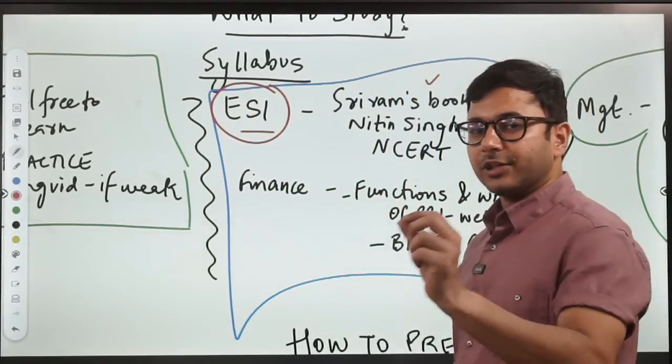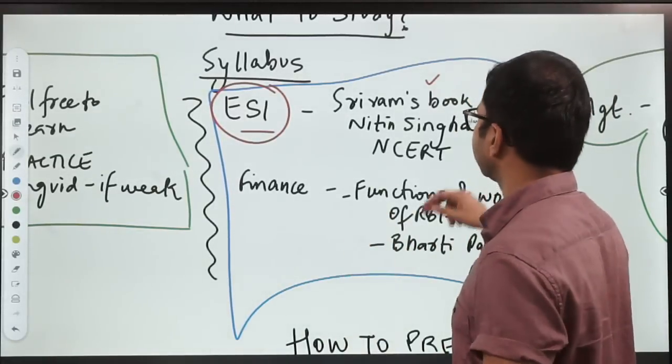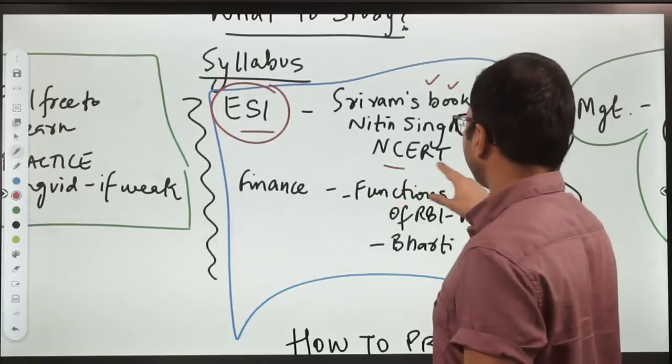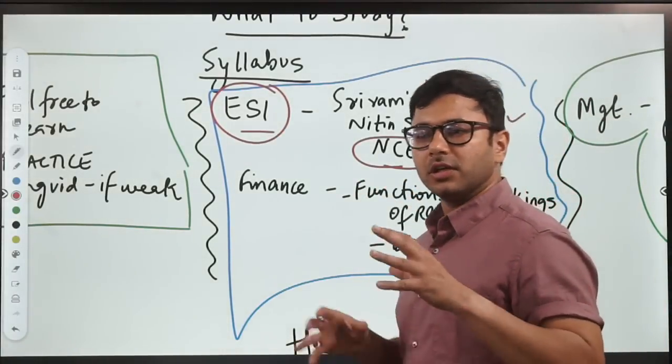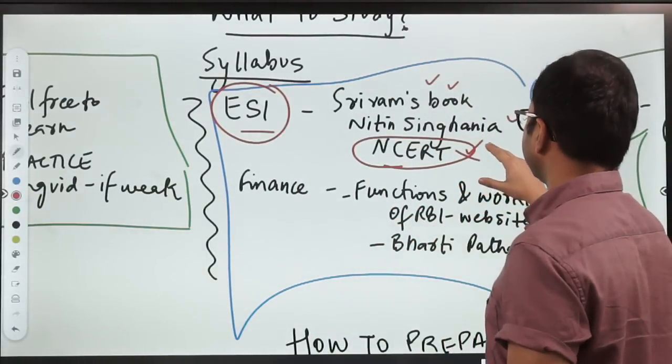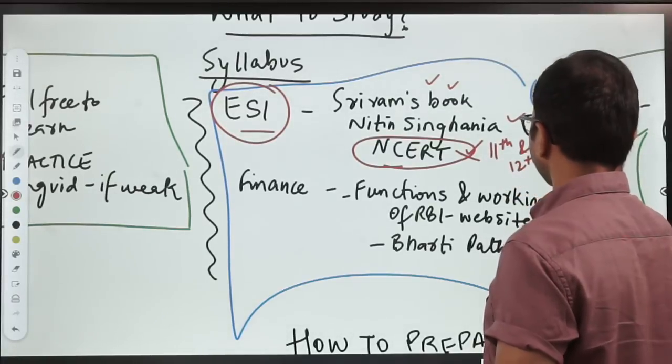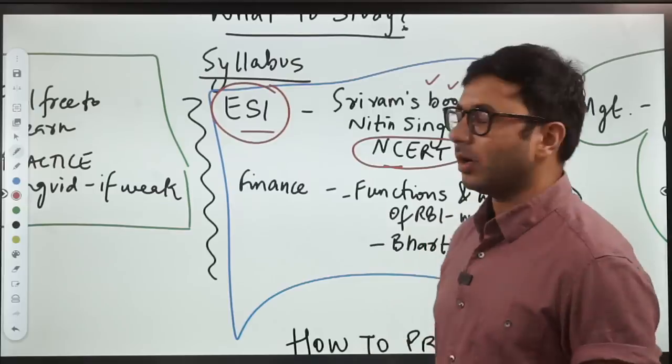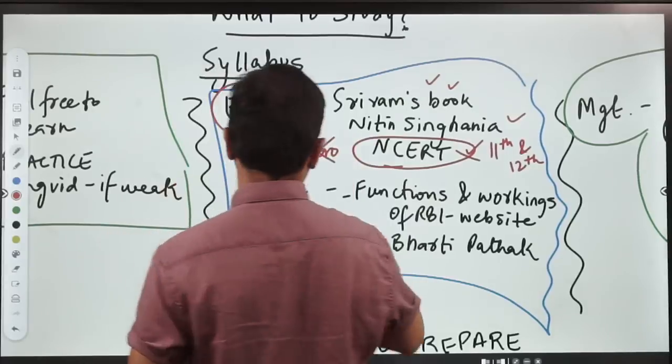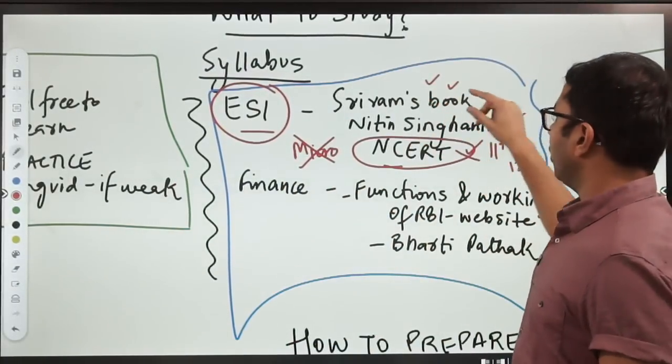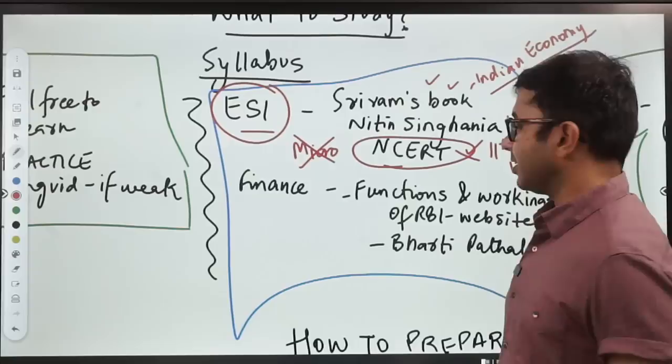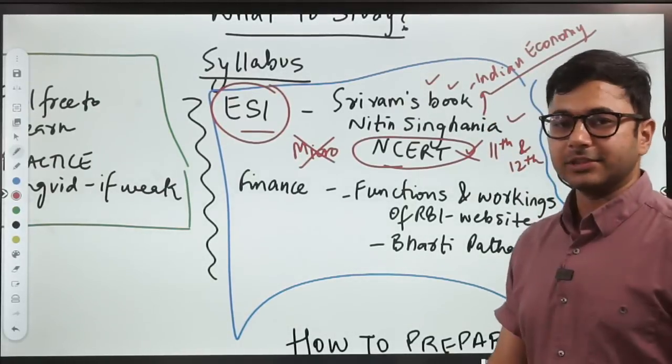You have to do the economic and social issues syllabus and secondly current affairs. You can cover the syllabus through Sriram's book or Nitin Singhania's book or NCERT. NCERT is just a preliminary method of preparation, it doesn't go in depth. When I'm talking about NCERT, I mean NCERT of 11th and 12th, both macroeconomics plus Indian economy. Microeconomics you don't have to study. Sriram's book is for Indian economy, used for UPSC but the syllabus is exactly the same as RBI.